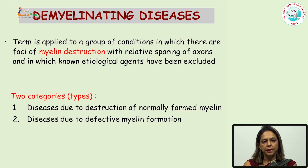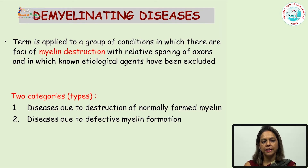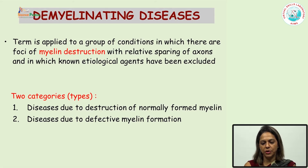The term demyelination is applied to a group of conditions in which there is focal myelin destruction with relative sparing of axons. It can be divided into two main categories: number one, the diseases in which there is extensive destruction of normally formed myelin, and number two, diseases in which there is defective myelin formation.